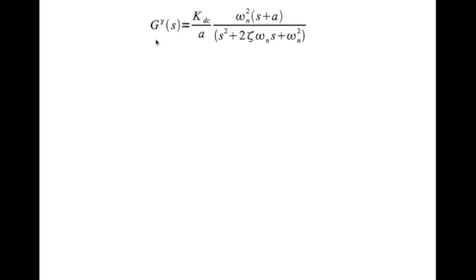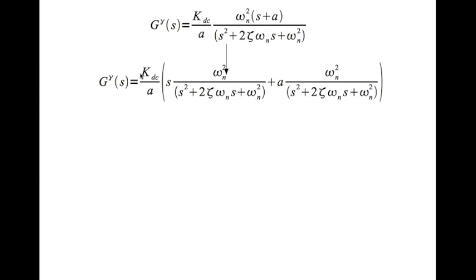Now what is this? So you can write G' of s as this. This is the transfer function. I can write G' of s as K_DC divided by a times - I've just basically separated these two terms out like so. Now if you observe, what is this? And what is this?